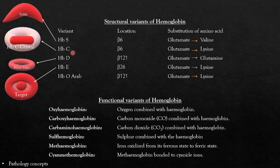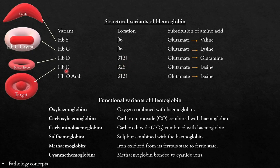Sickle cell disease is discussed in detail in a separate video — the link is in the description below. In HbC, glutamate is replaced by lysine and generates HbC crystals in RBCs. In HbD, glutamate is replaced by glutamine at the 121st position of the beta globin chain; the most common abnormality seen is microcytic hypochromic RBCs. In HbE, glutamate is replaced by lysine at the 26th position of the beta globin gene; the most common RBC abnormality seen is target cells. In HbO Arab, glutamate is replaced by lysine at the 121st position of the beta globin gene.